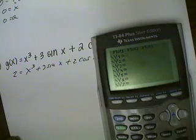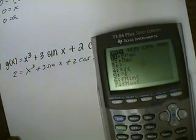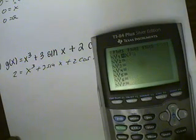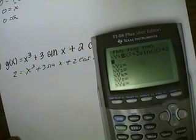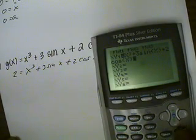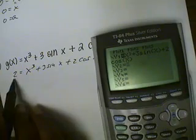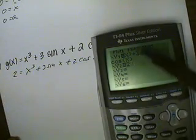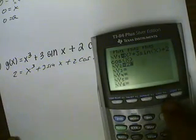Let's go to y1. Let's put in x cubed, let's see, math 3. And then plus 3 sine x, close parenthesis, plus 2 cosine, where's the x, close parenthesis. Okay, that's my first equation. Then we're going to put another equation equal to 2. We're going to find out where these two equations meet. So let's graph.